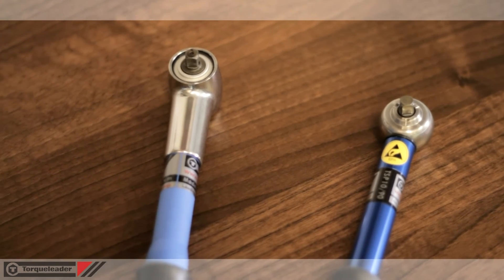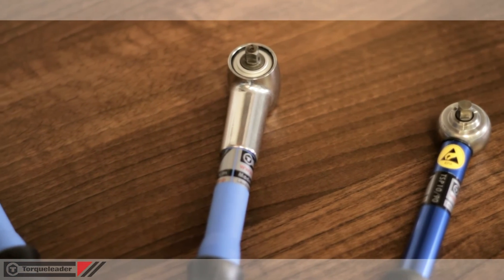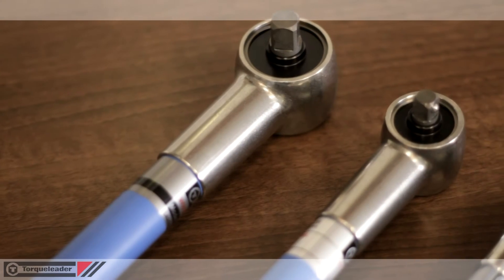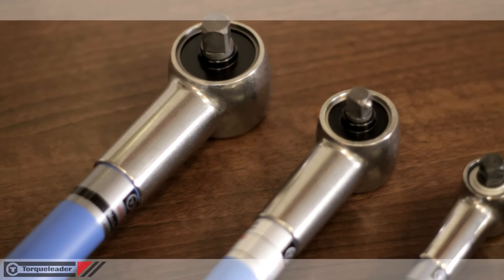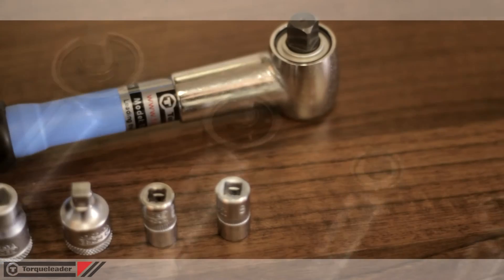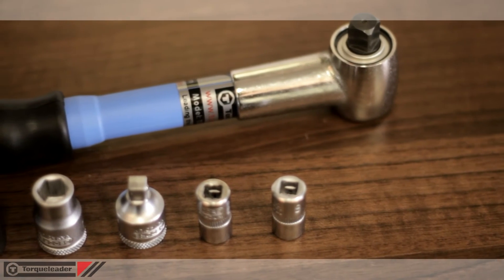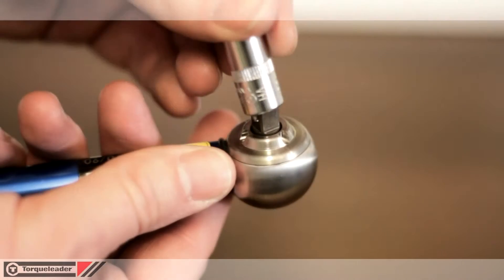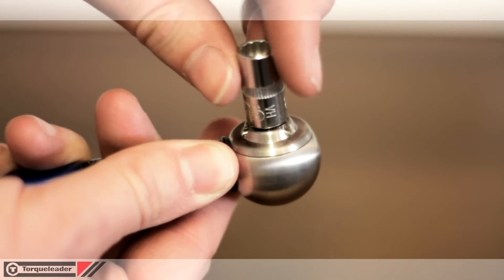TSP wrenches cover a range from 1 to 10 Nm. The larger TSN models have an overall range from 3 to 125 Nm. Each tool features a square drive for use with socket accessories and a single direction ratchet.